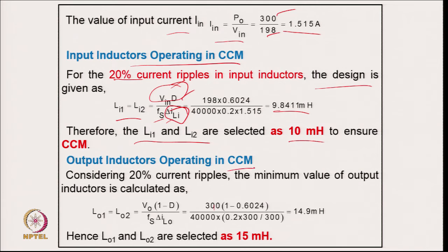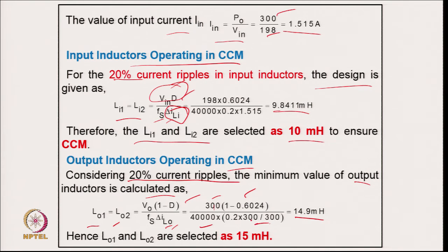The output inductor also operates in CCM with 20 percent current ripple. The minimum output inductance calculated from the output voltage, ripple current, duty cycle, and switching frequency gives 14.9 mH. A slightly higher value of 15 mH is selected.